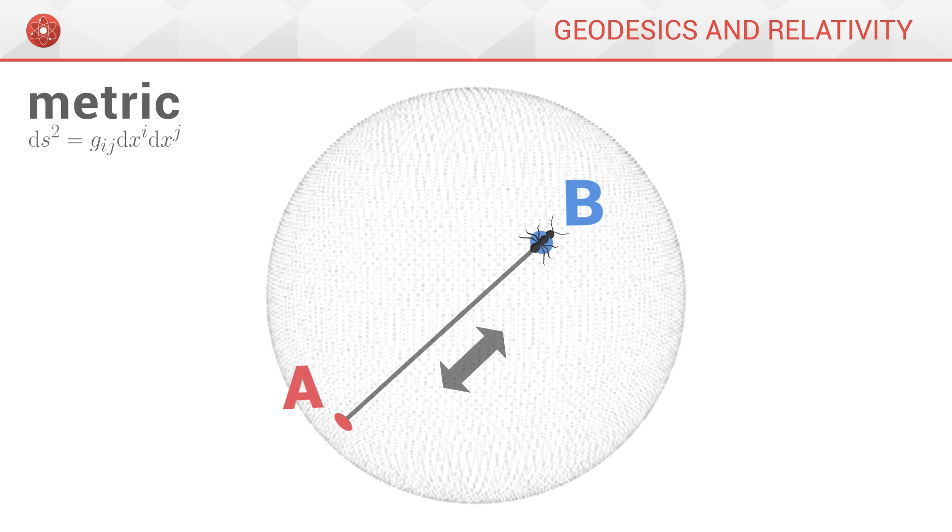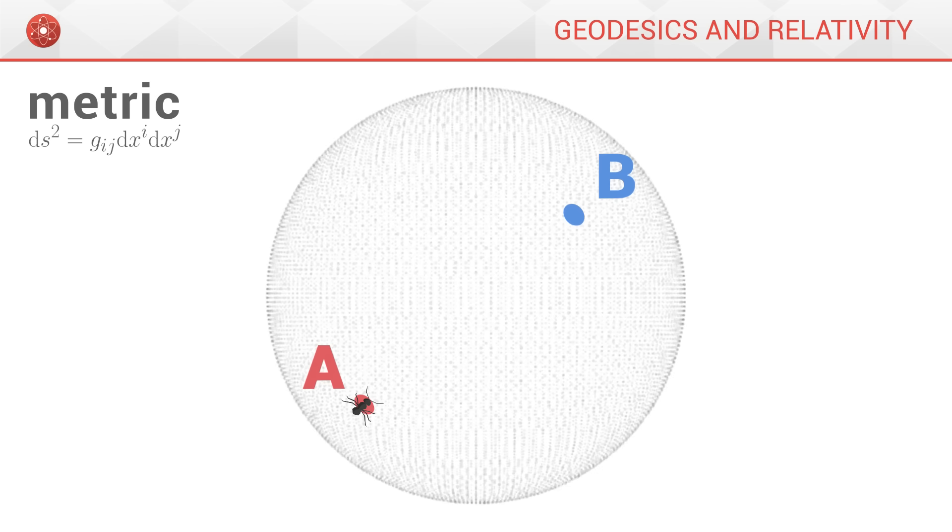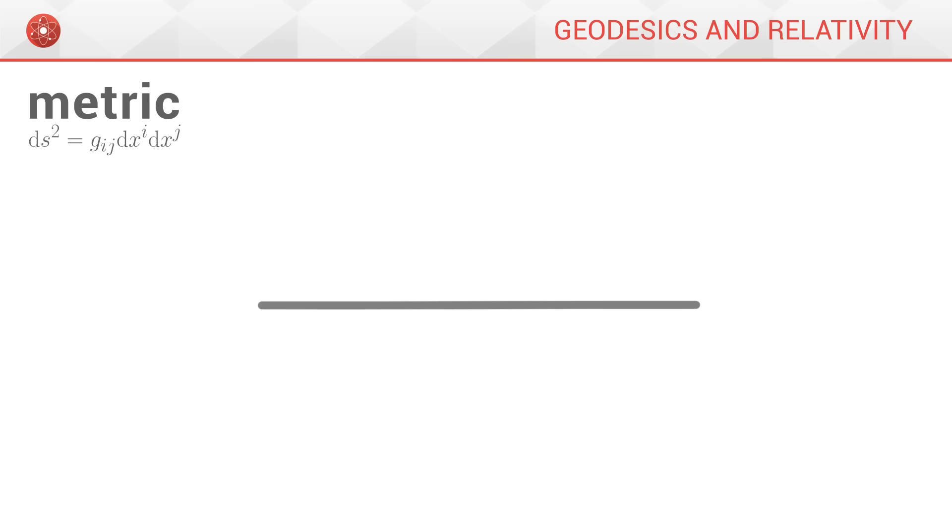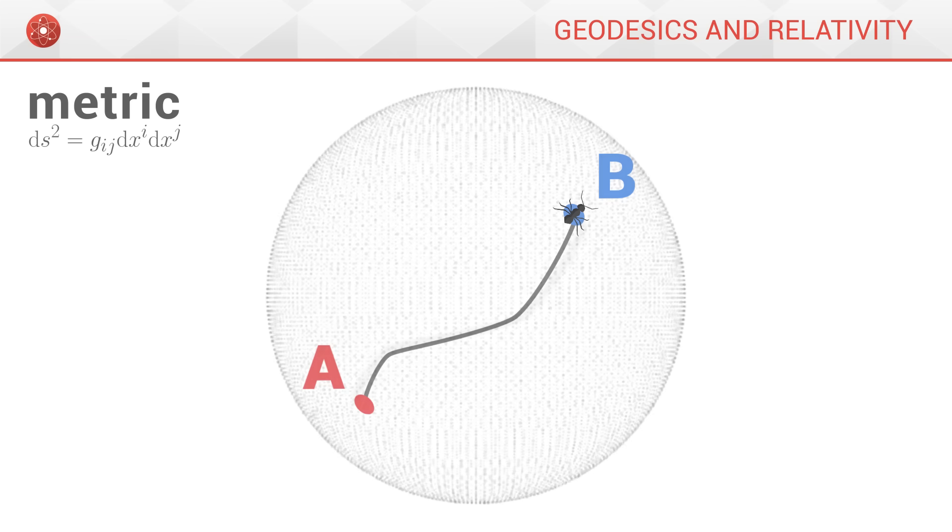But what is the distance between A and B? By definition, the distance between two points is the length of the shortest path that connects them. But at the moment, we don't know if the path followed by the ant is optimal. It might have walked in zigzags and taken a longer path than the true distance between the two points. The metric allows us to measure the length of a path, but it doesn't tell us whether or not this path is the shortest one possible.